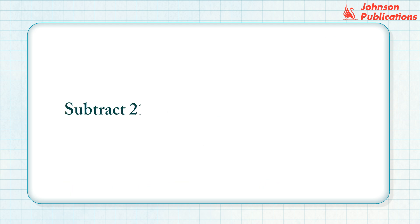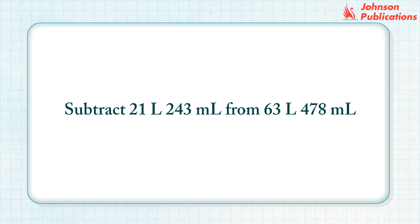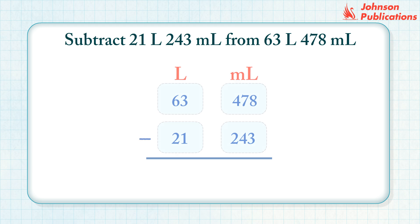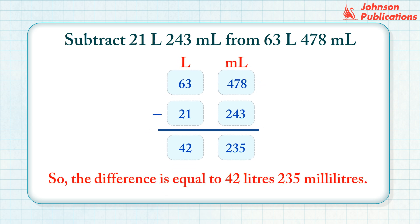Let us subtract 21 liters 243 milliliters from 63 liters 478 milliliters. Step 1: Arrange the capacities into their respective columns of units. Step 2: Subtract the milliliters column. Step 3: Subtract the liters column. So, the difference is equal to 42 liters, 235 milliliters.